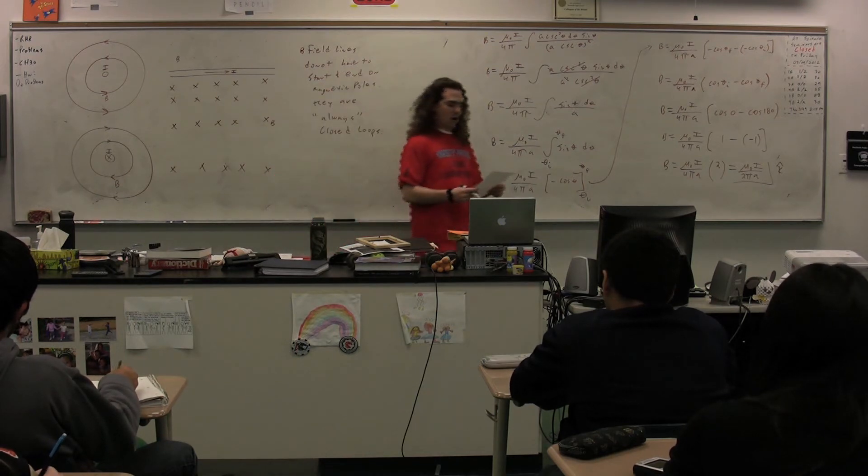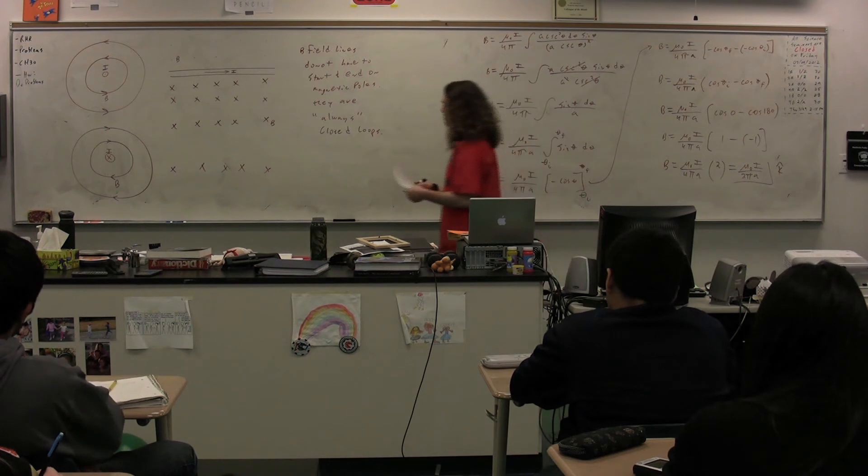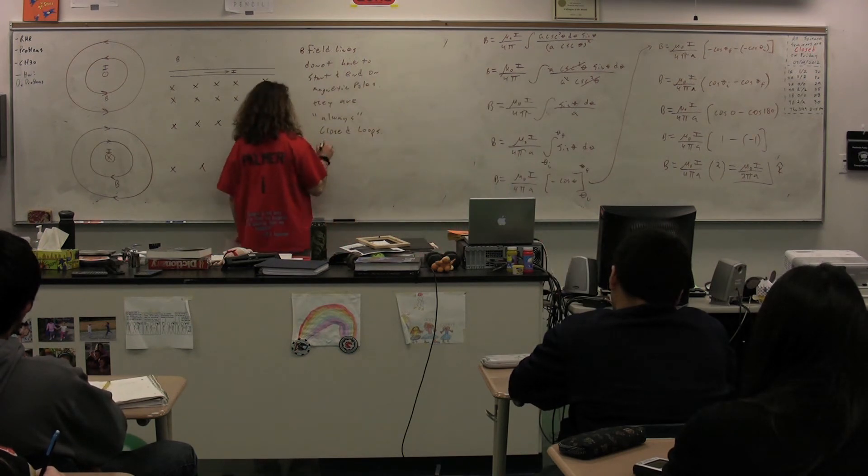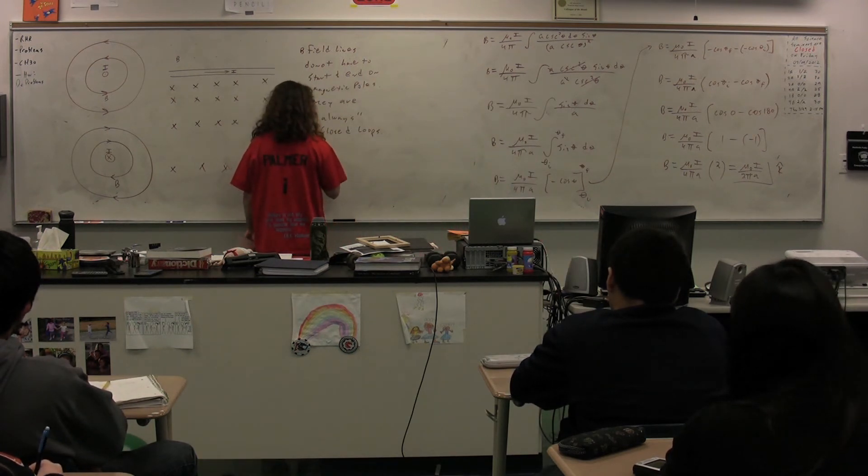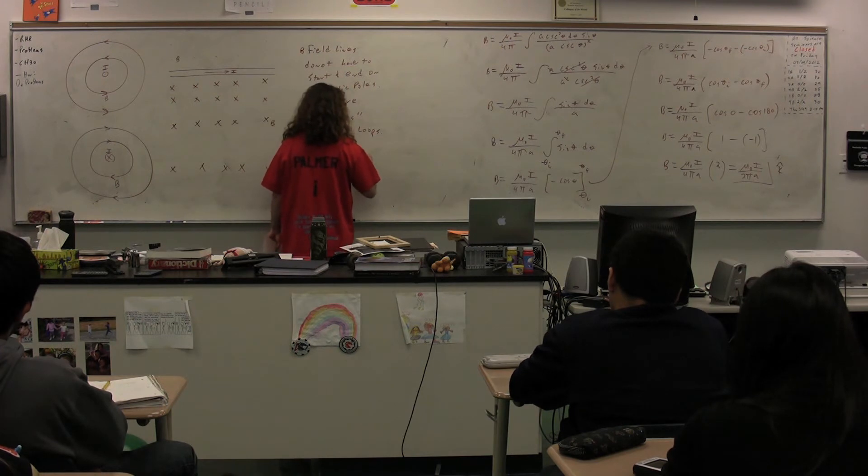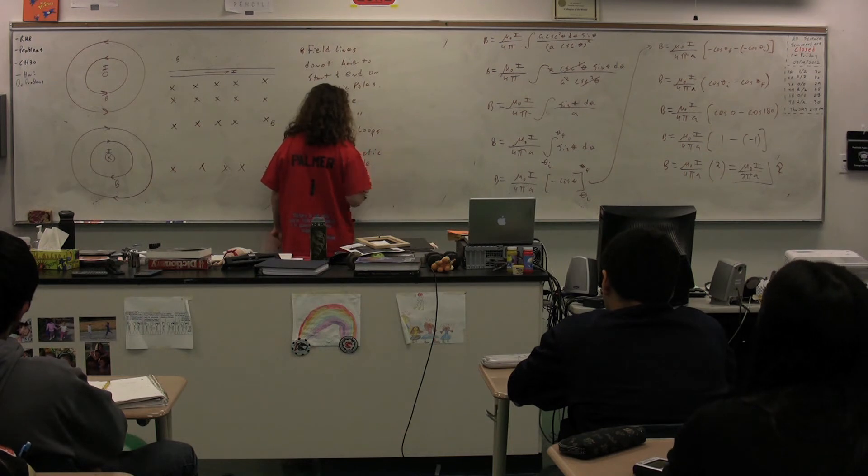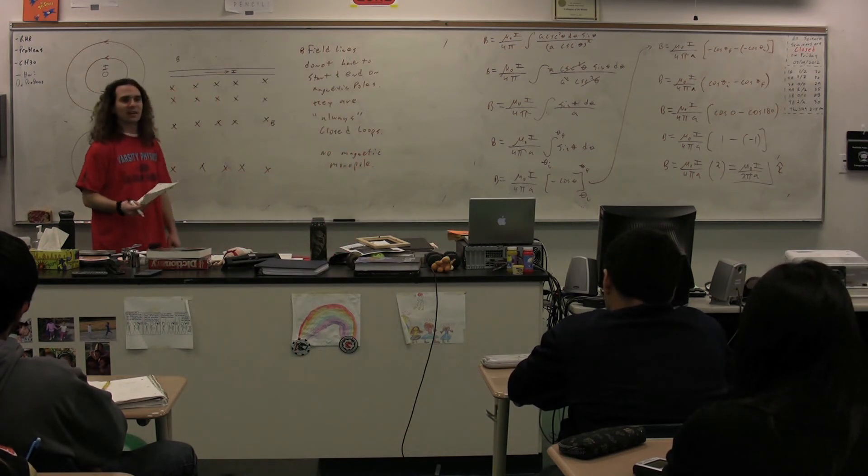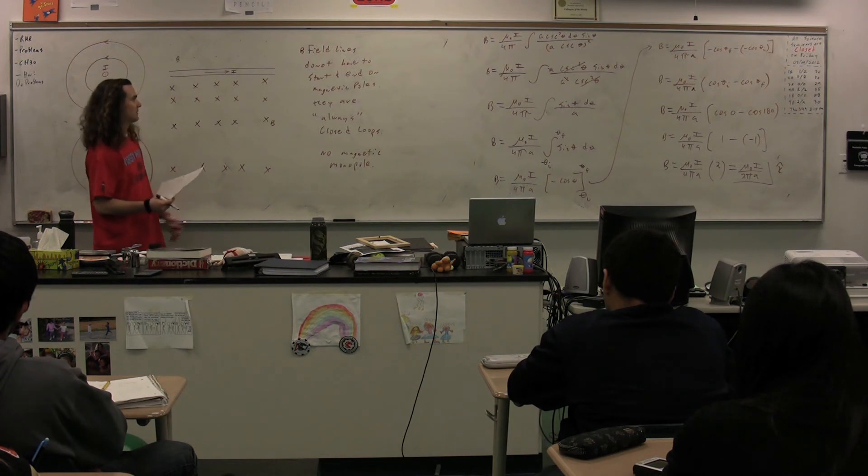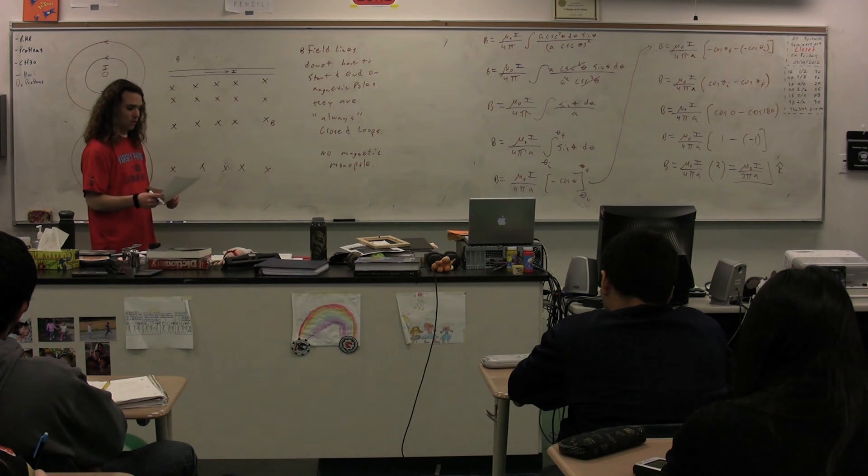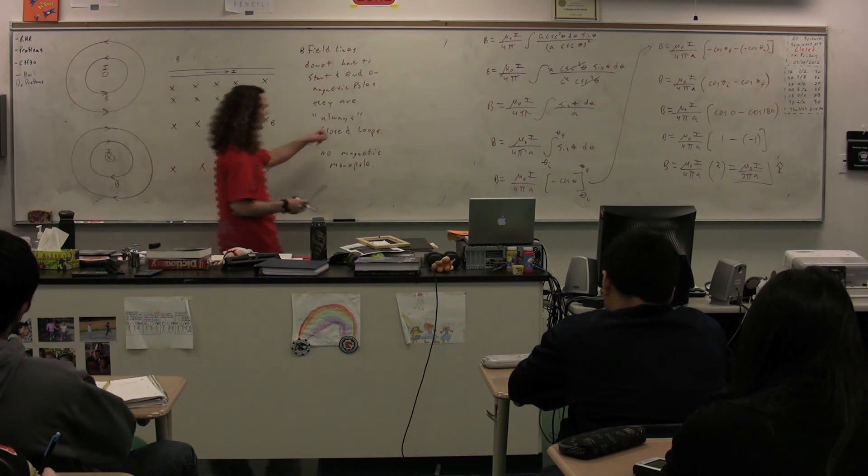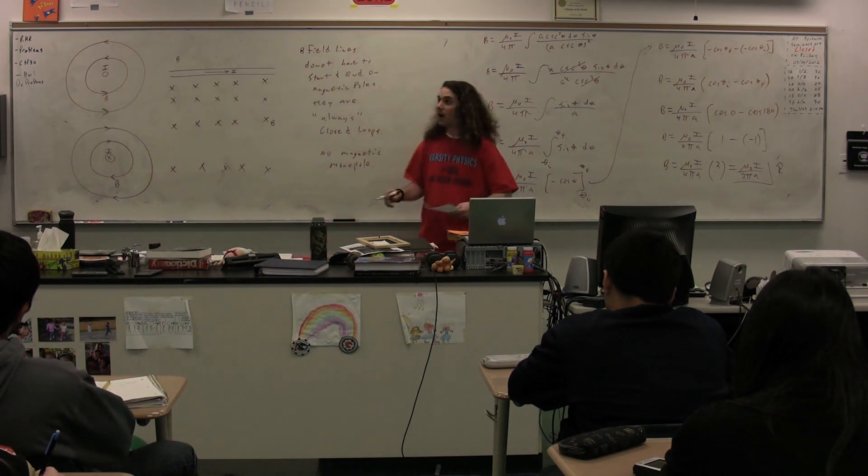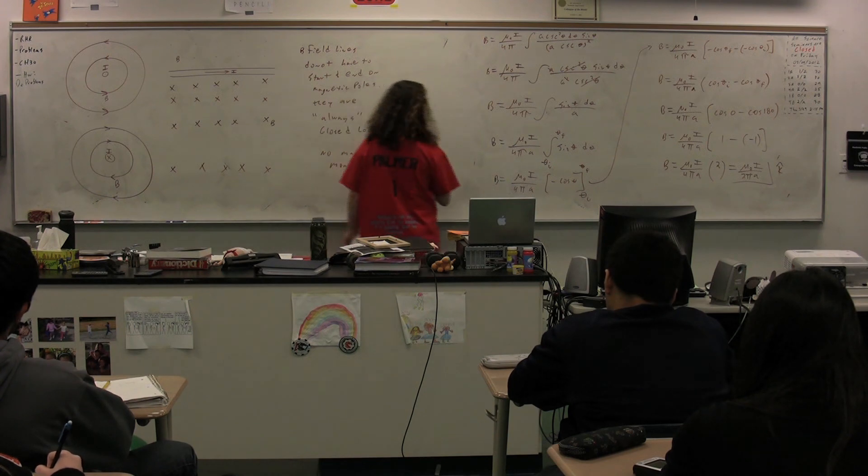The reason they are always closed loops is because we have never found a magnetic monopole. If we someday find a magnetic monopole, we will find a location where the magnetic field ends at that point. But because we have never found a magnetic monopole, as far as we know, magnetic fields are always closed loops.